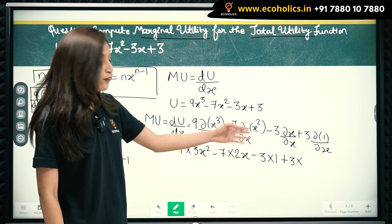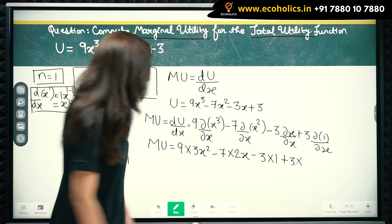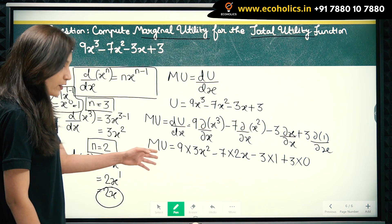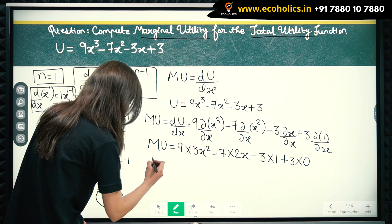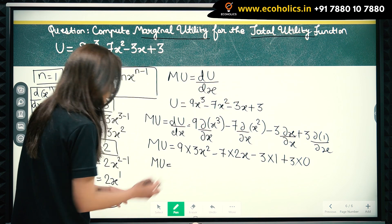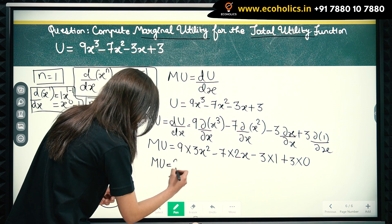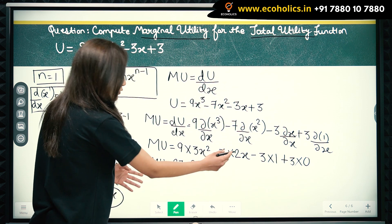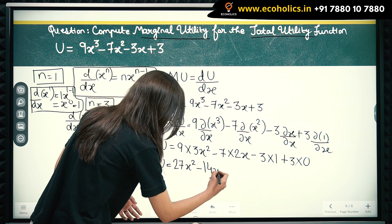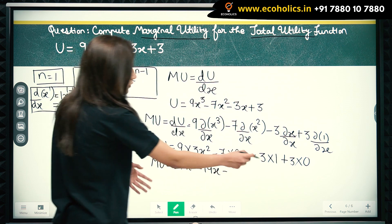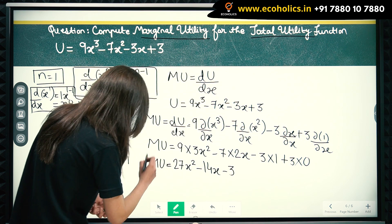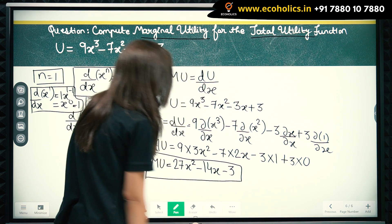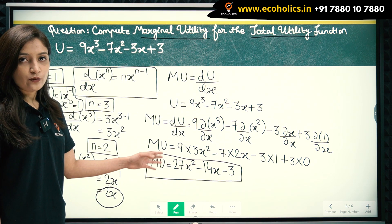The derivative of a constant term is always zero, so the derivative of 3 is zero. Therefore, marginal utility equals 9 times 3 equals 27x squared, minus 7 times 2 equals 14x, minus 3 times 1 equals 3. So marginal utility equals 27x squared minus 14x minus 3.